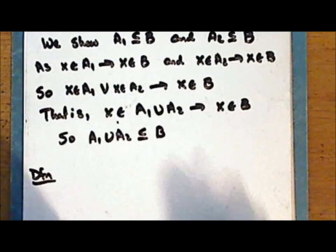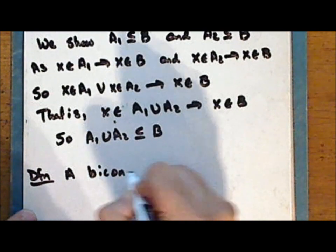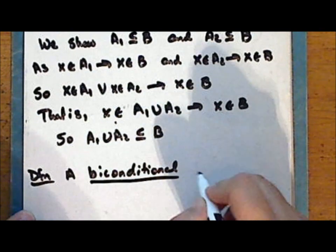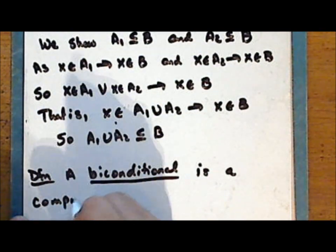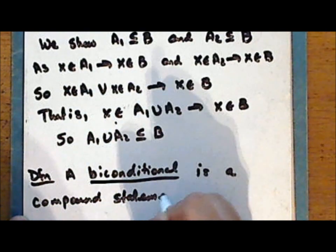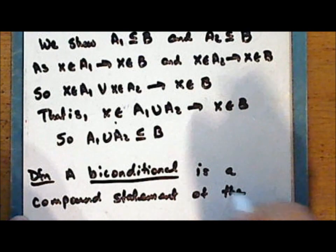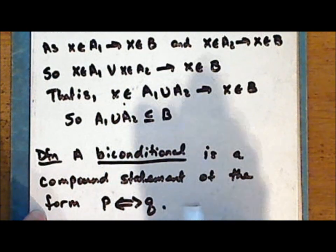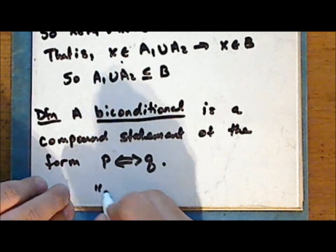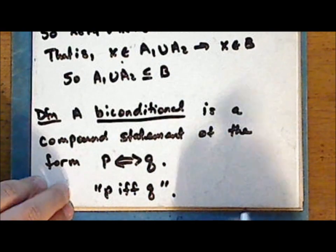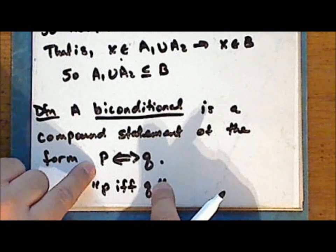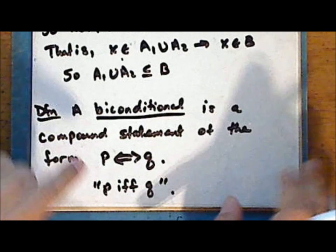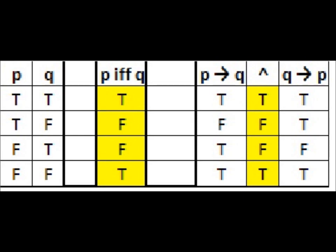Next we look at a biconditional. A biconditional is a compound statement of the form P implies and is implied by Q. When written out, this takes the form: P if and only if Q. Notice that in a biconditional, the statement P is logically equivalent to the statement Q. From the truth table, we see that the biconditional P if and only if Q is logically equivalent to the implication P implies Q and its converse Q implies P.